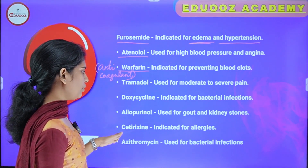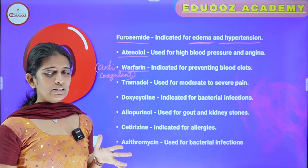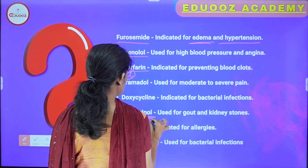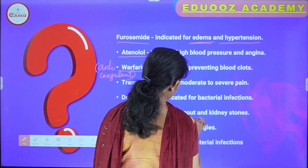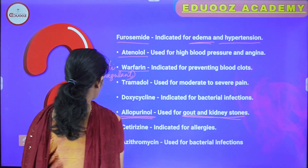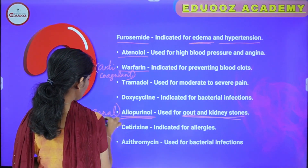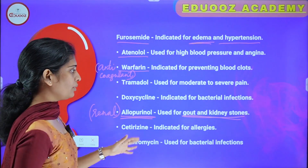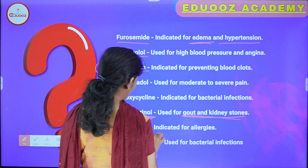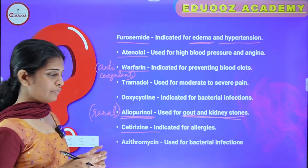Allopurinol is a xanthine oxidase inhibitor. It is indicated for gout and kidney stones. Cetirizine is indicated for allergies. Azithromycin is used for bacterial infections.